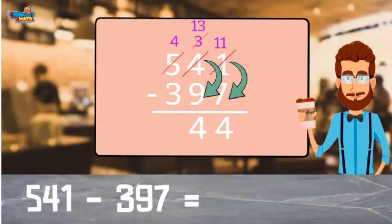Finish off with the hundreds place. 4 minus 3 equals 1. So 541 minus 397 equals 144.